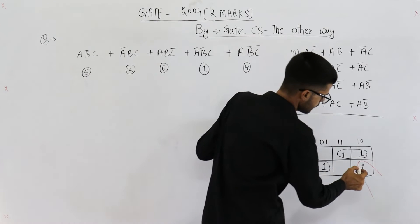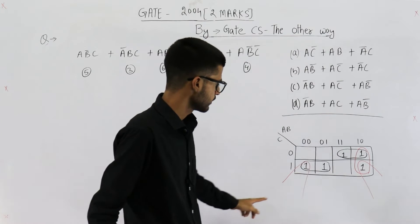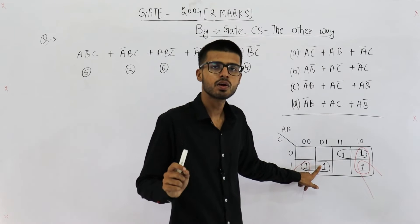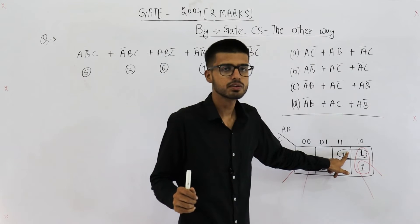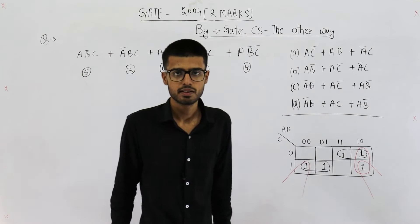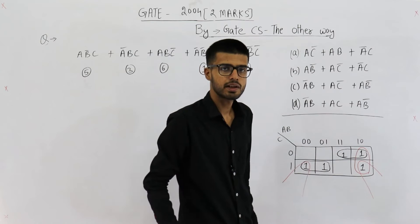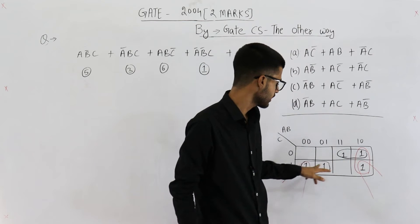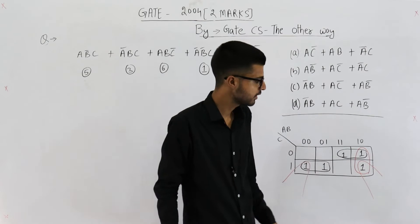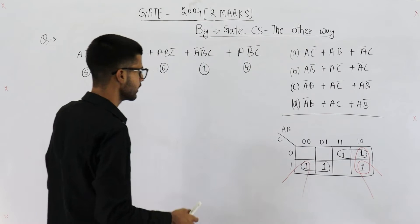The two ways of grouping are the first method and the second method. The prime implicants drawn in black are essential because they are not covered by any other prime implicant. The prime implicants drawn in red are not essential — the corner ones are already covered by other prime implicants, and if you ignore the other red one, both cells are already covered by the two black prime implicants.